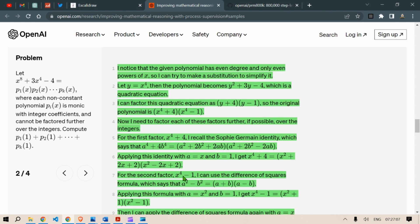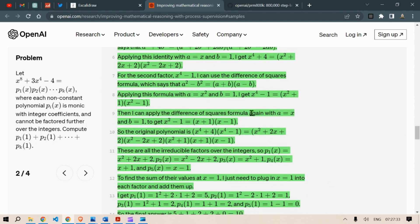For the second factor, x to the power 4 minus 1, I can use a difference of square formula, which says a square minus b square is equal to a plus b into a minus b. Applying this formula with a is equal to x square and b is equal to 1, we get x to the power 4 minus 1 is x square plus 1 multiplied by x square minus 1. Then I can apply the difference of square formula again with a is equal to x and b is equal to 1, so we get x square minus 1 is x plus 1 and x minus 1.